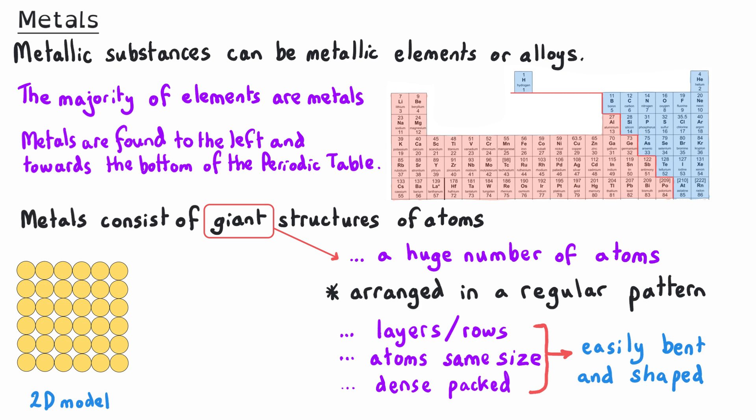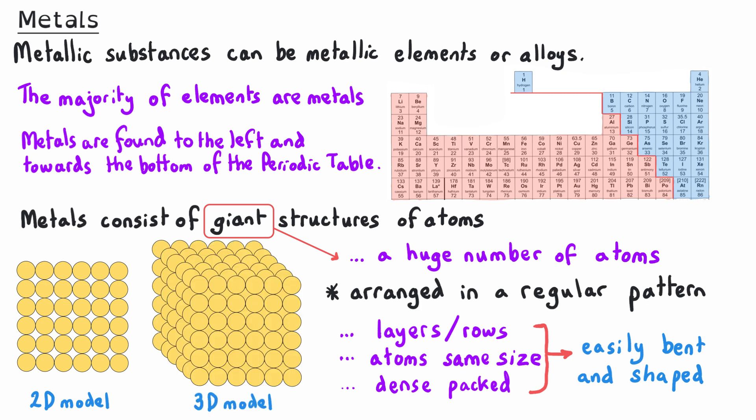These aspects of the structure allow metals to be bent and shaped easily. Normally you draw a diagram of a metallic structure in two dimensions, because it's easier and more clear, but it is worth noting that they are three-dimensional shapes really. Their layered structure and dense packing of atoms does continue into three dimensions.